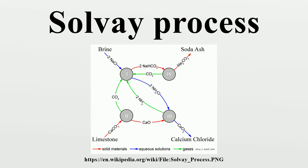There were several attempts to reduce this reaction to industrial practice with varying success. In 1861, Belgian industrial chemist Ernest Solvay turned his attention to the problem, apparently largely unaware of the extensive earlier work. His solution — a 24-metre gas-absorption tower in which carbon dioxide bubbled up through a descending flow of brine — together with efficient recovery and recycling of the ammonia, proved effective. By 1864, Solvay and his brother Alfred had acquired financial backing and constructed a plant in the Belgian town of Charlois.